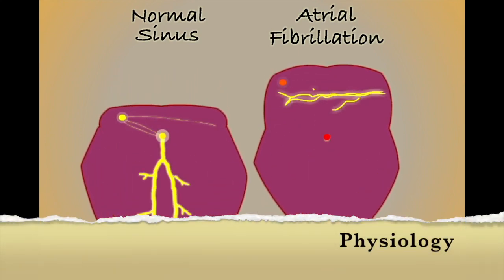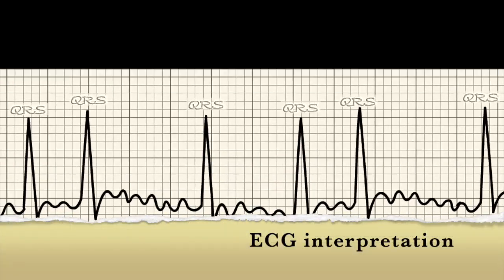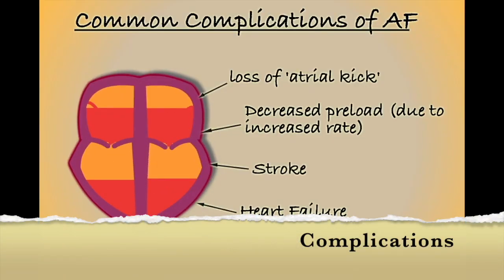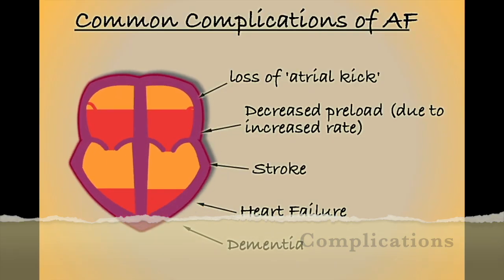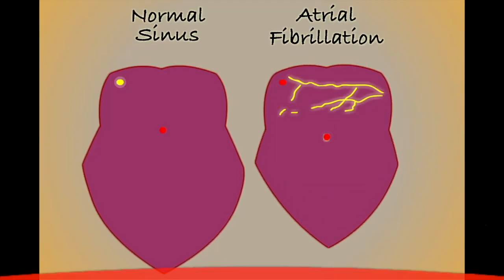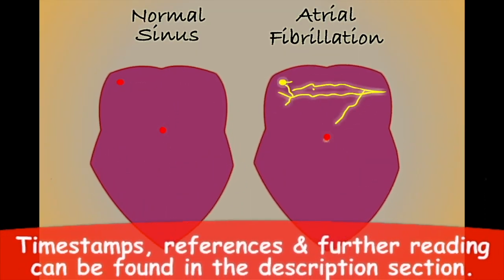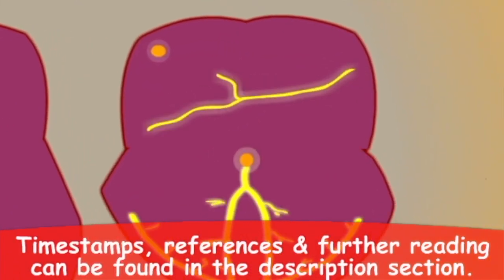In this video, we'll use some simple graphics to help simplify and explain the basics of atrial fibrillation. AF is a cardiac dysrhythmia that results from the conduction of irregular and disorganised electrical activity in the atria.